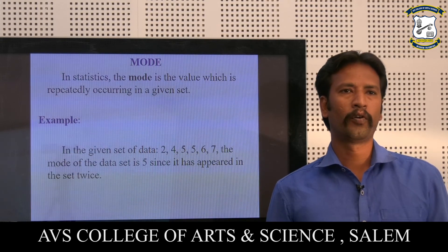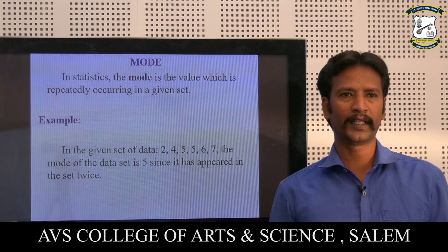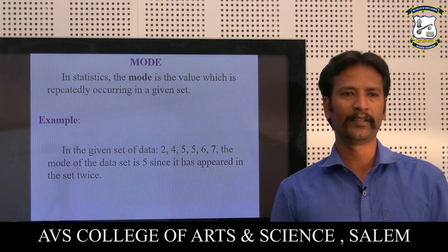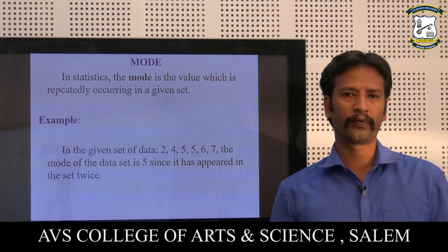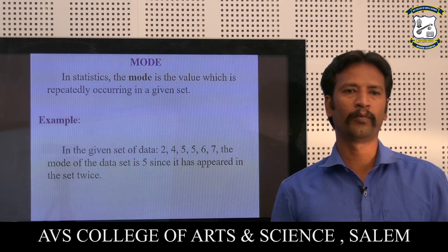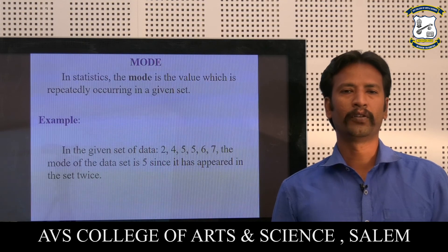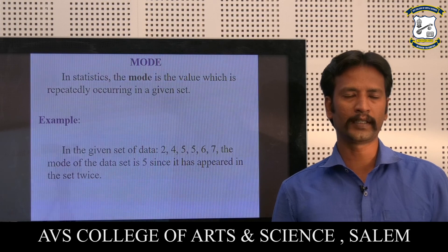Mode: in statistics, the mode is the value which is repeatedly occurring in a given set. Example: in a given set of data — 2, 4, 5, 5, 6, 7 — the mode of the set is 5, because 5 is repeated 2 times. Therefore, the mode is 5.